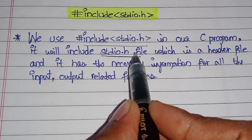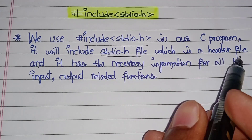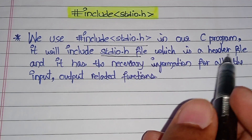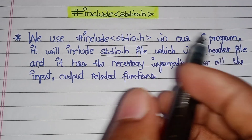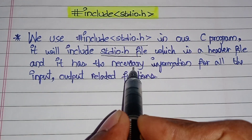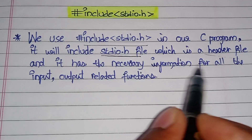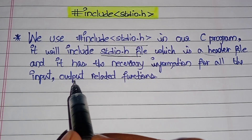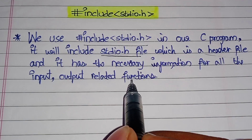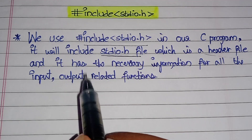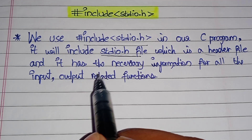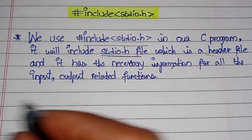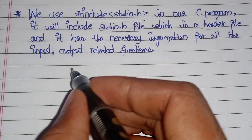stdio.h is a header file which is used in the first line of a C program. It has the necessary information for all the input and output related functions. This file includes the input and output related functions of our program.